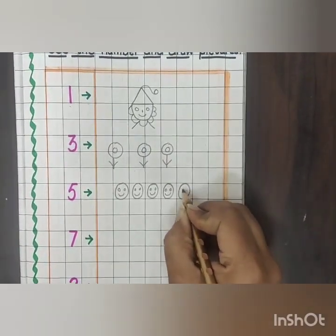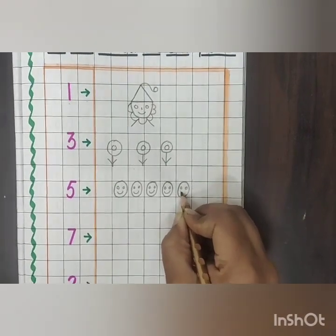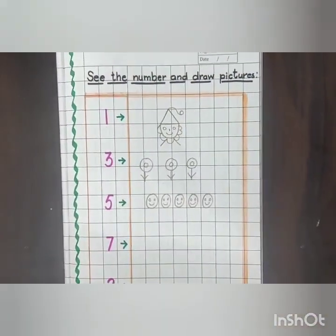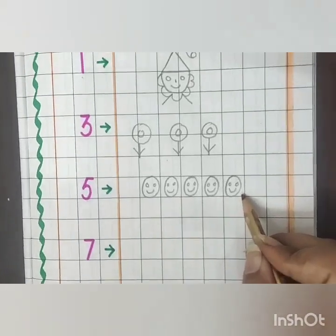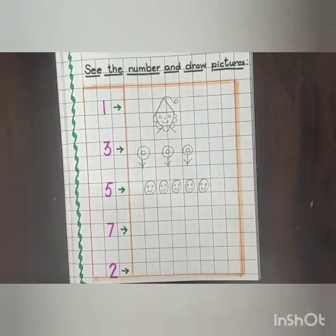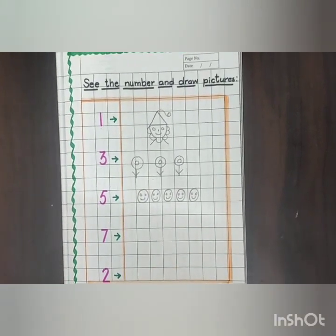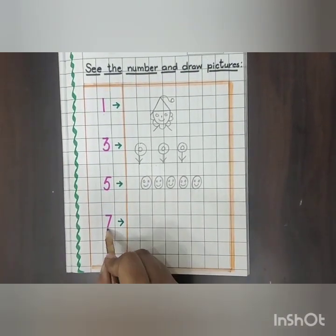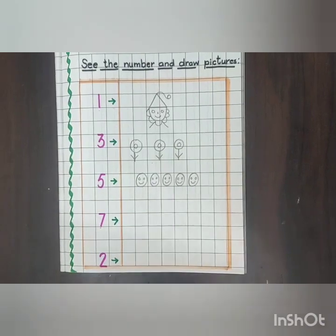And the last is five. Here I have drawn five smileys. Now the next number is number seven, so here I will draw seven pictures. Seven, okay.